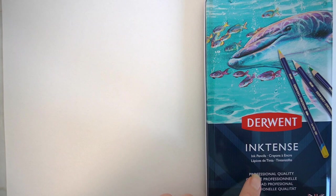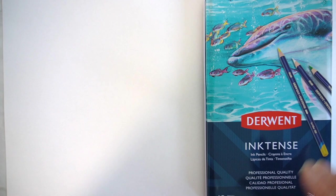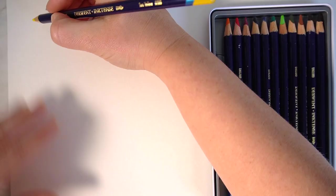Let's get started with these Inktense coloring pencils. I'm going to swatch them as a color and then I'm going to activate them with a bit of water so we'll have comparison side by side. So I'm going to start with the Sun Yellow, which is number 200. I have been wanting to try these for a while.